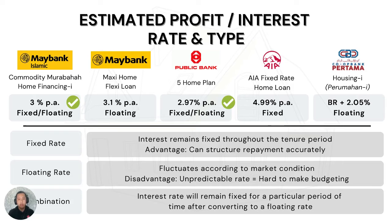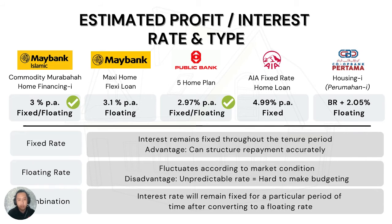Next I will explain the interest rate types. There are three types. First is the fixed rate — this means the interest rate will not change regardless of market conditions, which is beneficial because borrowers can plan and maintain their repayments accurately. Second is the floating rate, which is the opposite — the rate can change at any time, increasing or decreasing depending on market conditions, which may cause borrowers trouble in planning their budget.